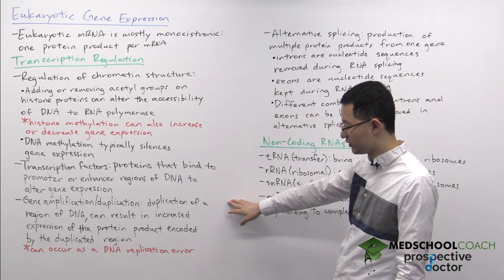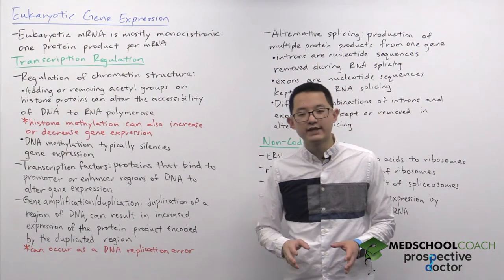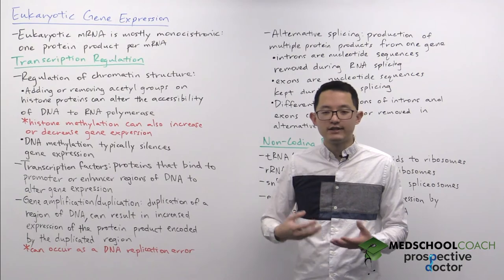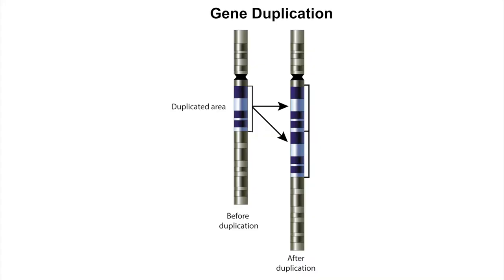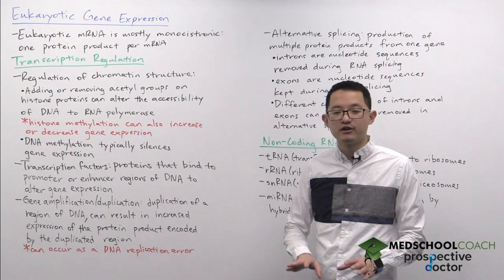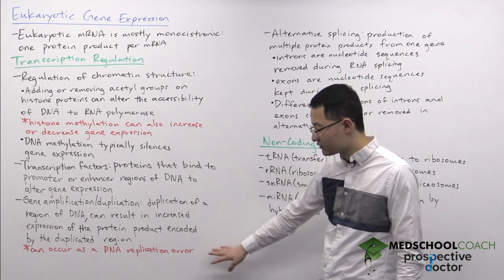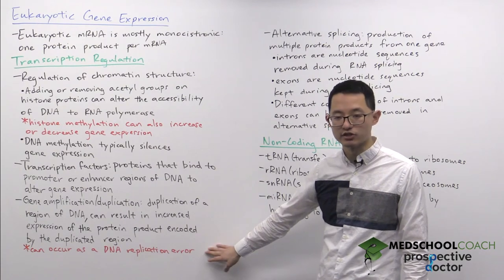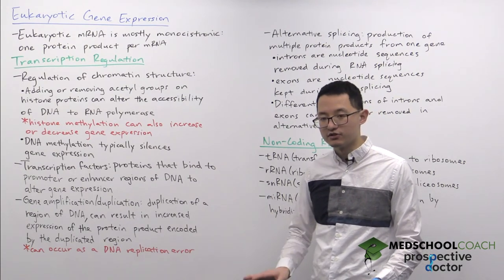Next, we can look at gene amplification or duplication. This involves duplicating a region of DNA, as shown in this diagram. When you duplicate a region of DNA and that duplication includes the promoter as well as the entire coding region, it can result in increased expression of that protein product — you may produce twice as many mRNA molecules and twice as many protein products. Gene duplication does not occur very often; it can occur as a result of an error in DNA replication.